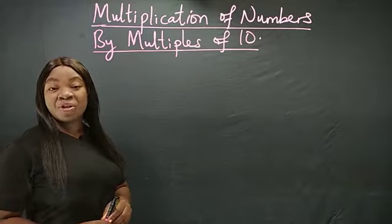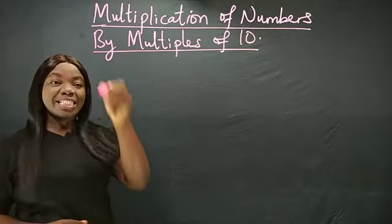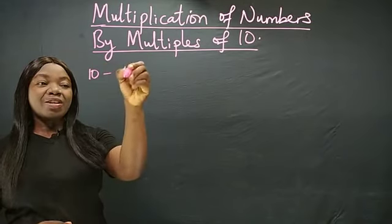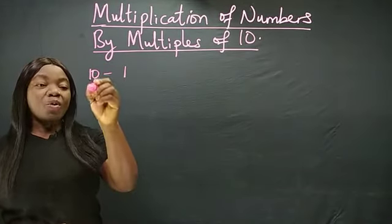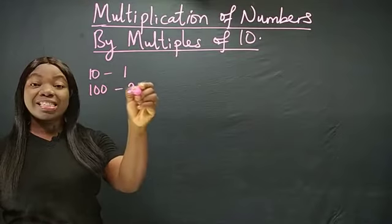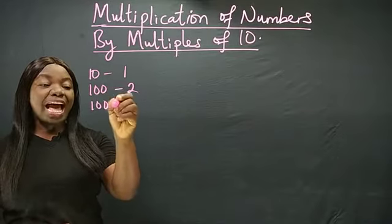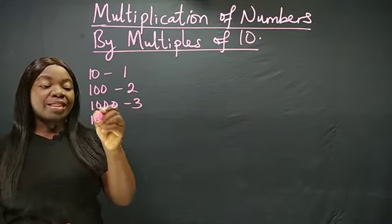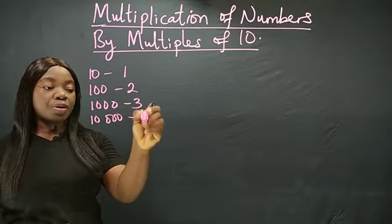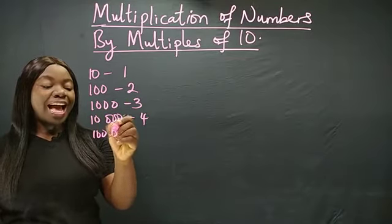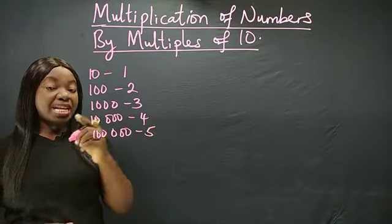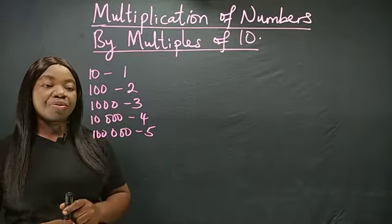The multiples of 10 we'll be using in this class are 10, which has only 1 as its index, 100 has 2 as its index, 1000 has 3, 10,000 has 4, 100,000 has 5, meaning that 10 has only 1 zero.